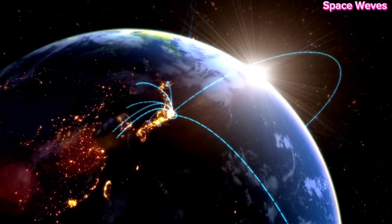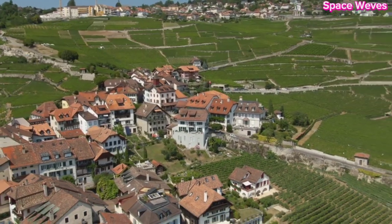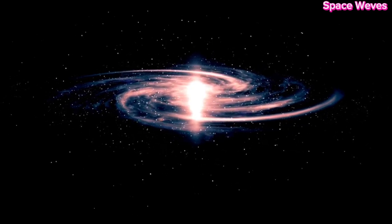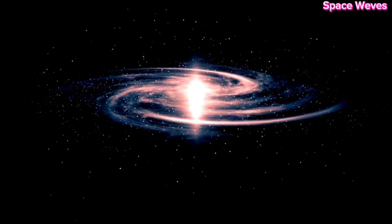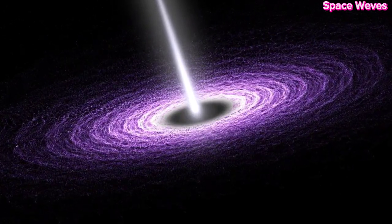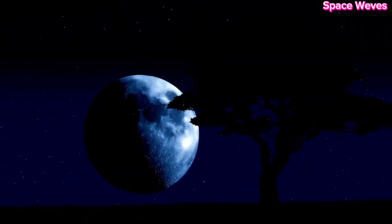As a red supergiant on the verge of explosion, Betelgeuse belongs to one of the largest and most massive types of stars in the universe. It has been closely monitored for years, but its recent irregular changes in brightness have fueled speculation that it is preparing to go supernova.